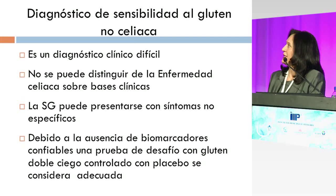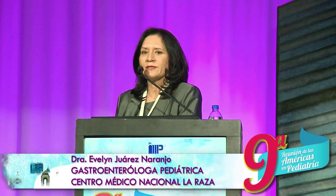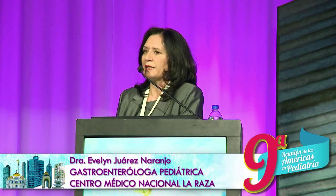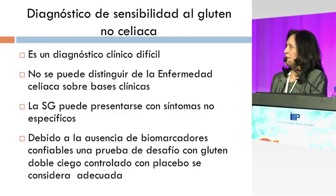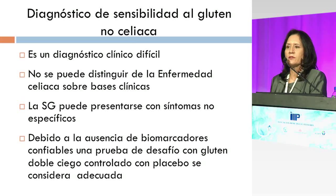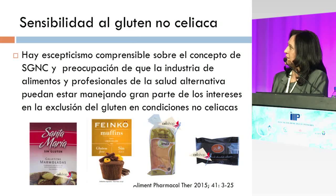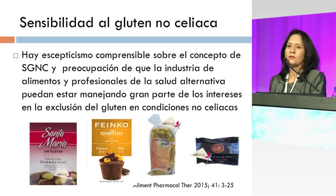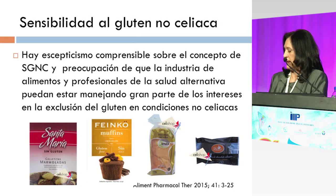¿Cómo hacemos el diagnóstico de la sensibilidad al gluten no celíaca? Es un diagnóstico por exclusión, un diagnóstico clínico difícil porque los síntomas se parecen mucho entre sí con los de enfermedad celíaca y alergia al trigo y pueden no ser específicos. Es más difícil porque no tenemos biomarcadores confiables para hacer el diagnóstico, pero una prueba de desafío con gluten doble ciego controlado con placebo se considera adecuada en algunos pacientes. Hay escepticismo acerca de este concepto y preocupación de que la industria de los alimentos y profesionales de la salud alternativa puedan estar manejando gran parte de estos intereses en la exclusión del gluten en condiciones no celíacas.